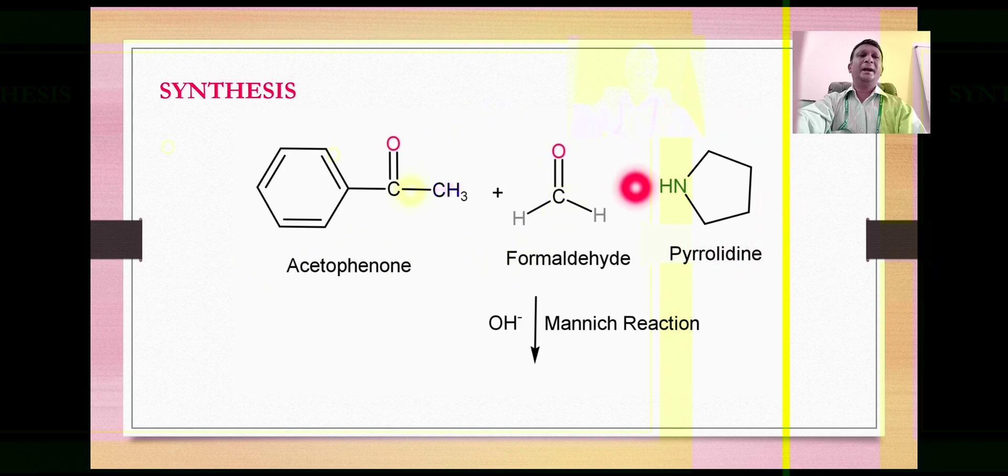The reaction takes place in presence of a base. This base abstracts one of the protons from the alpha carbon so that it will become a carbanion. The negatively charged carbon ion then attacks on the carbonyl carbon of formaldehyde to give a nucleophilic addition product. In this case it will become hydroxymethyl derivative which is then attacked by the amino group of pyrrolidine.